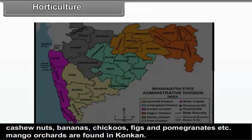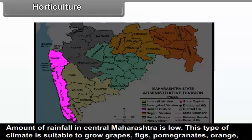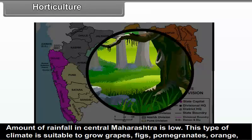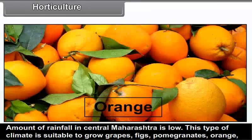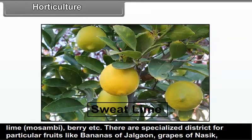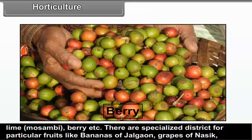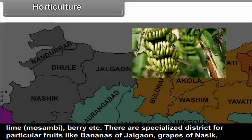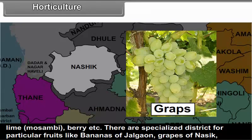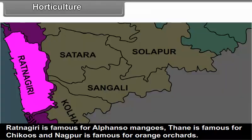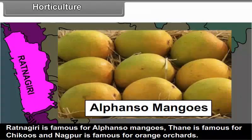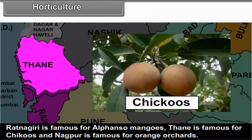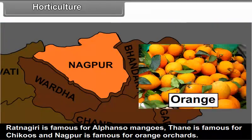Mango orchards are found in Konkan. The amount of rainfall in central Maharashtra is low, and this type of climate is suitable to grow grapes, figs, pomegranates, orange, sweet lime (mosambi), and berry. There are specialized districts for particular fruits — bananas of Jalgaon, grapes of Nashik. Ratnagiri is famous for Alphonso mangoes. Thane is famous for chikus and Nagpur is famous for orange orchards.